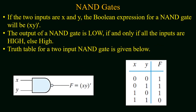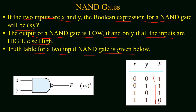If two inputs X and Y are applied to the NAND gate, the Boolean expression for the NAND gate output will be (X · Y)'. The output of the NAND gate is low if and only if all the inputs are high; otherwise it will be high.